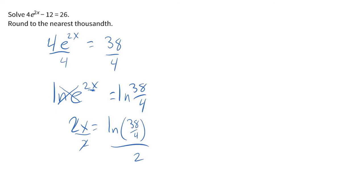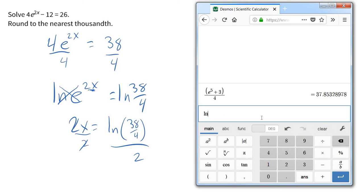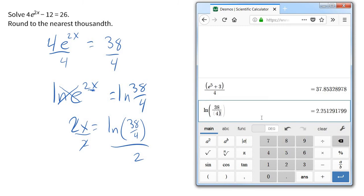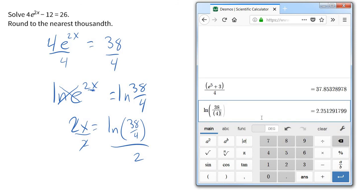Excuse me. And let's go plug that in our calculator, okay? So, I've got natural log of 38 fourths. And we're going to divide that whole thing. Whoops. We don't want that inside the natural log. So, let me go outside here.